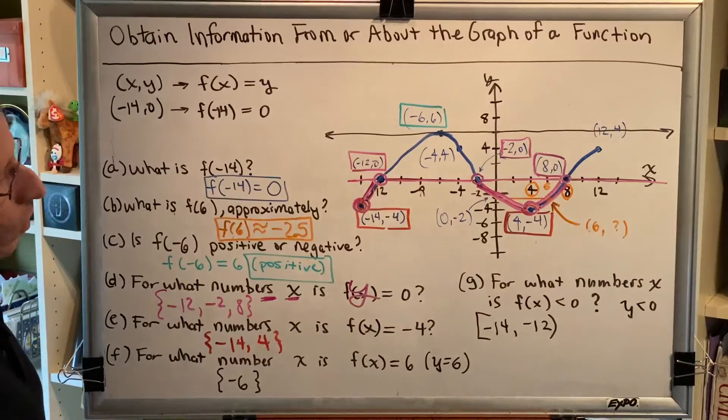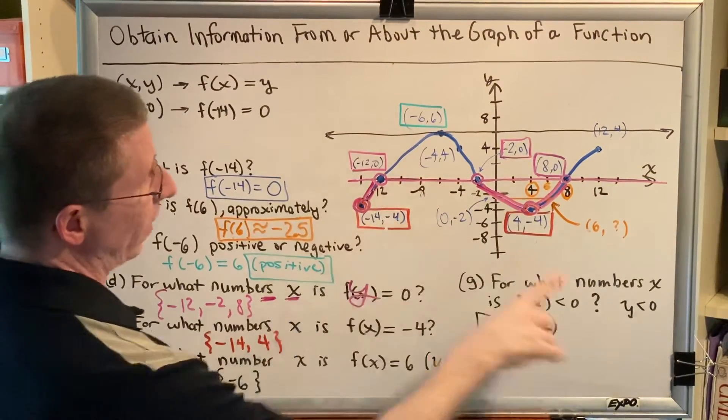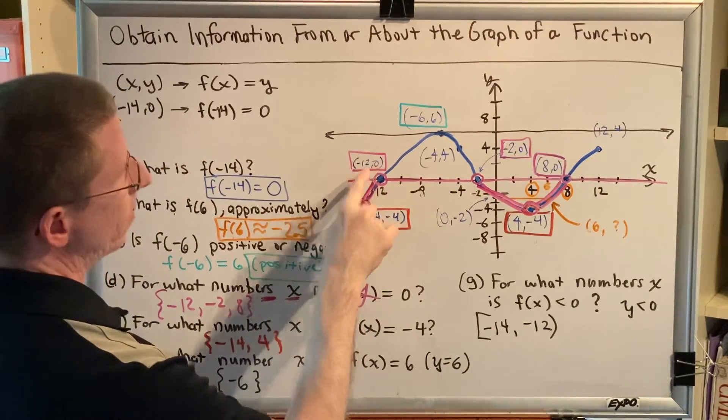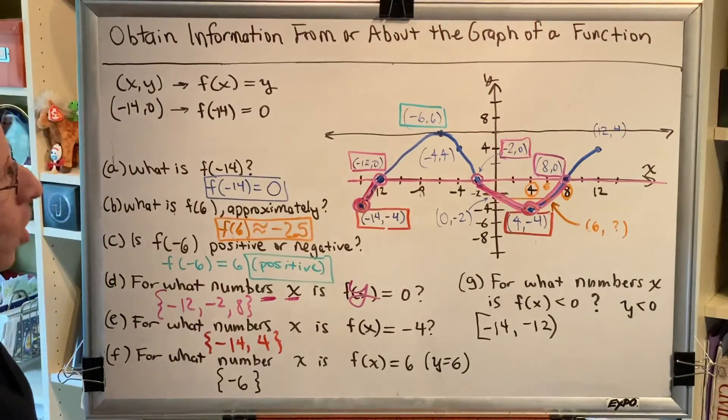Why? Well, at negative 14, the y value is negative, less than 0, so we have to include it. But at negative 12, it's not less than 0, it's equal to 0, so we have to exclude it.